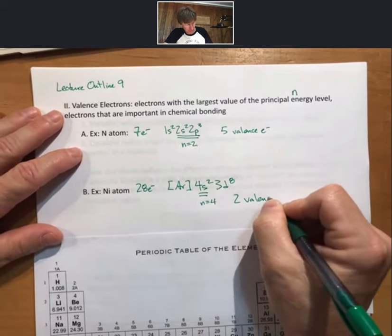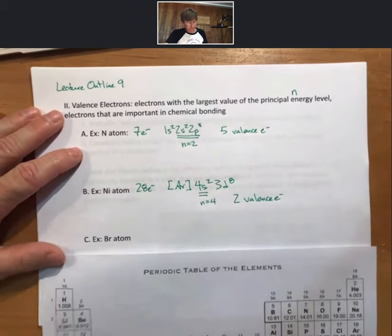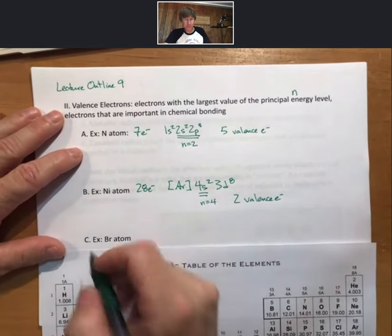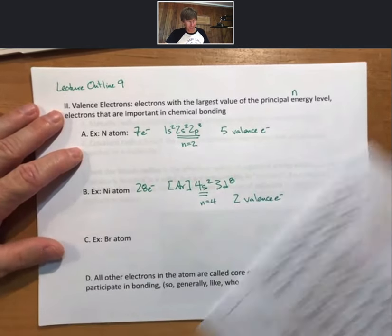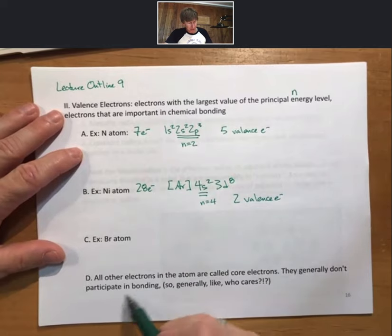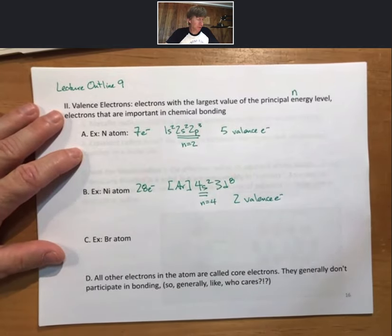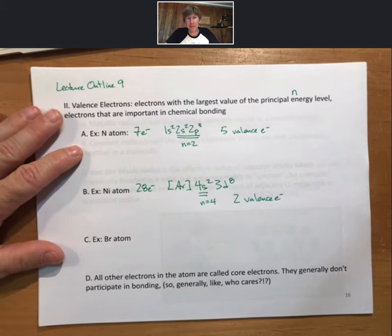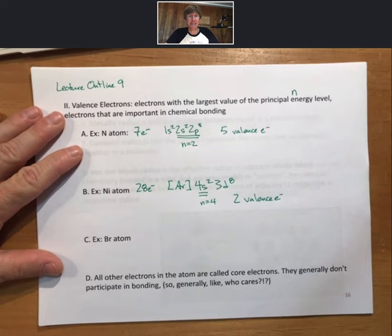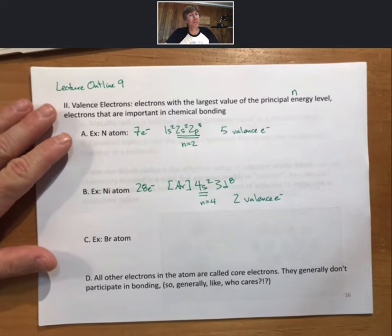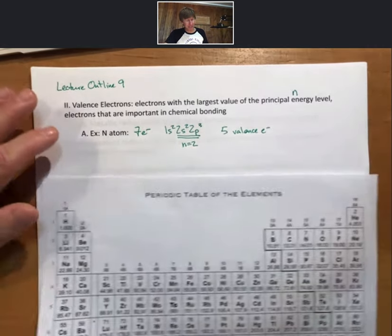Bromine atom, I'll let that be a companion problem. All other electrons in the atom are called core electrons. They generally don't participate in bonding, so generally, who cares? Well, of course we do on some level, but we are moving towards talking about bonding specifically, and we will be almost always interested in the valence electrons.